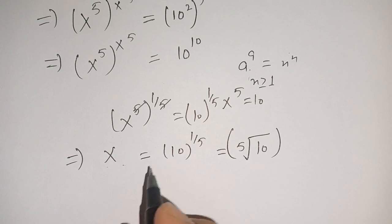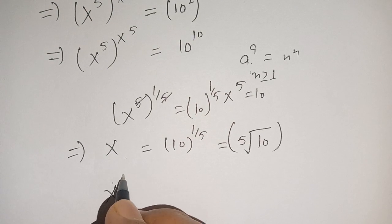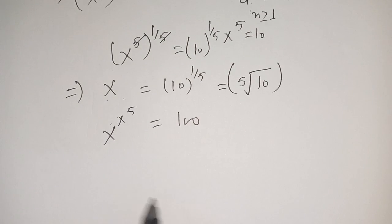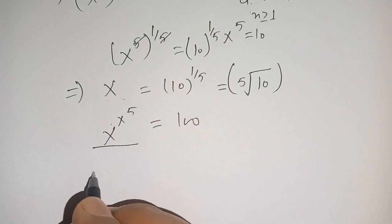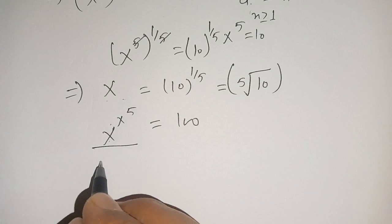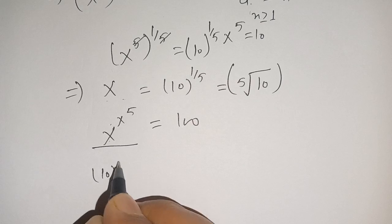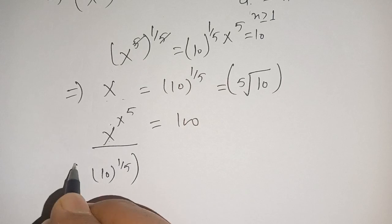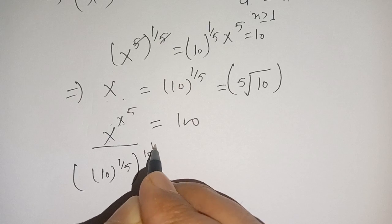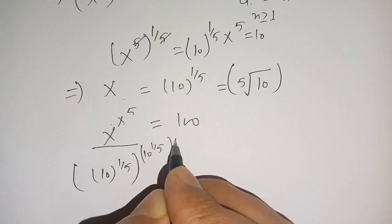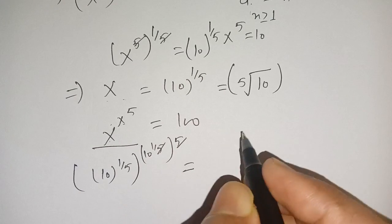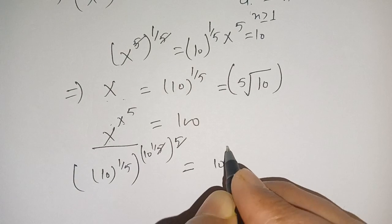Our original equation is x^(x^5) = 100. Taking the left-hand side, in place of x we substitute the fifth root of 10, which is 10^(1/5). We get (10^(1/5)) to the power (10^(1/5))^5. The 5s cancel, giving (10^(1/5))^10.